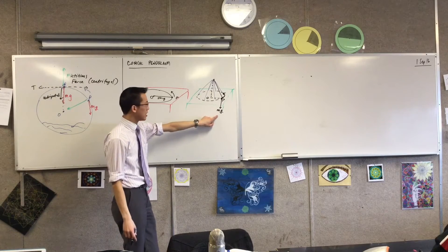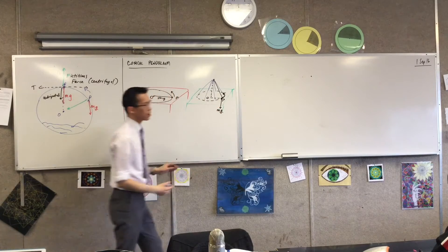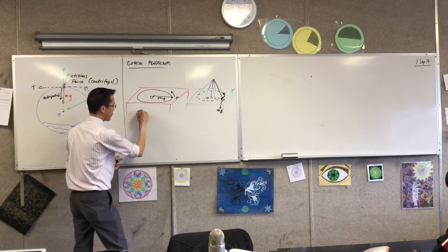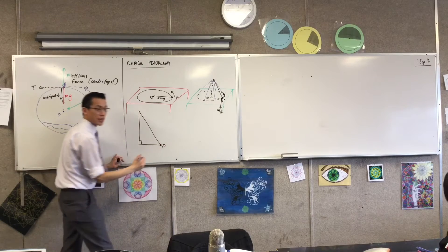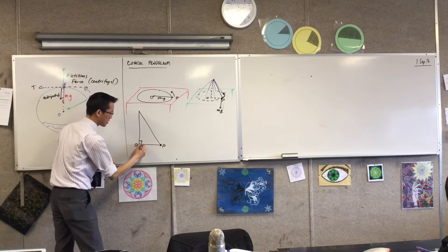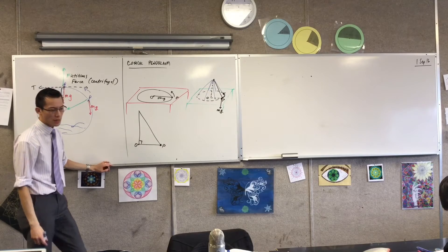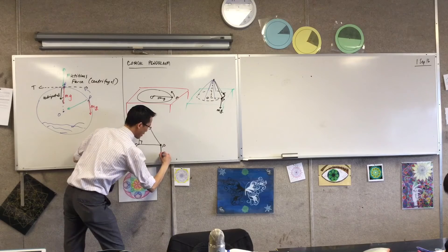Now think about this. This guy here, mg, right, which is heading down this way. If I have, I'm now going to redraw this, but with less fluff around it. If I have this looking side on, here's a right angle, here's where my object is, here's the center of motion over here.